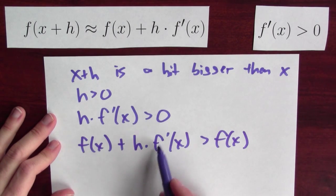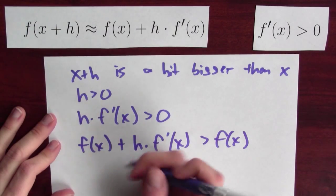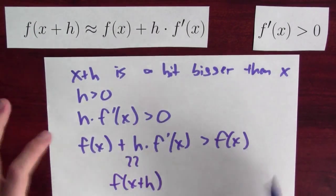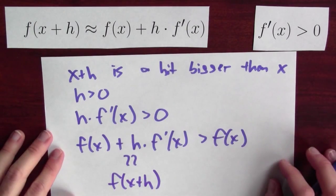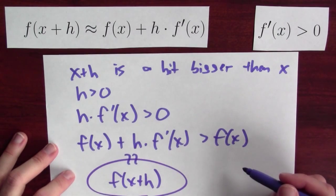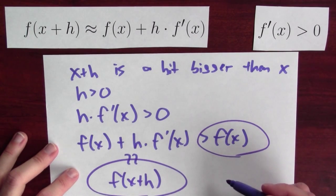Now, f of x plus h times f prime of x, that's about f of x plus h. So, although this argument isn't entirely precise yet, what it looks like it's saying is that the function's output at x plus h is bigger than the function's output at x.